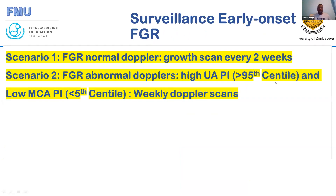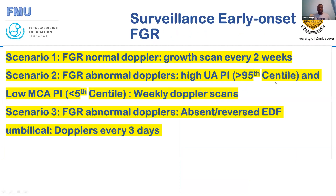How do we conduct surveillance of early onset FGR in our units in Zimbabwe? We use the FMF protocols. In the first scenario, if there is an estimated fetal weight below the 10th centile and Dopplers are normal, we do growth scans including Dopplers every fortnight. In scenario two, if we have abnormal Dopplers in the form of a high PI in the umbilical artery, or if there is redistribution in the MCA — meaning a low PI in the MCA below the fifth centile — we do weekly Dopplers. In the third scenario, if we have absent or reversed end-diastolic flow in the umbilical artery, we do Dopplers every three days.